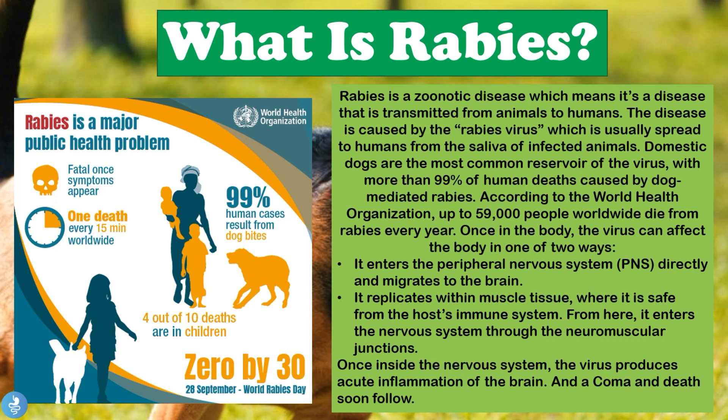So rabies is a zoonotic disease, transmitted from animals to humans, usually spread via saliva — either a bite or even a scratch in some cases. Although rabies vaccines in dogs are quite well implemented worldwide, we still have up to about 59,000 people worldwide who die from rabies each year.